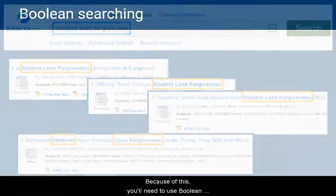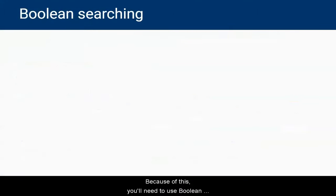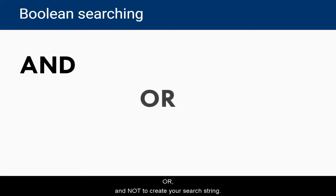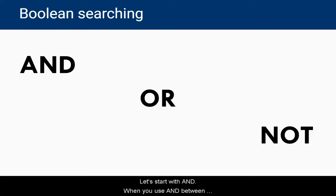Because of this, you'll need to use Boolean searching to get the best search results. Boolean searching uses the words AND, OR, and NOT to create your search string. Let's start with AND.